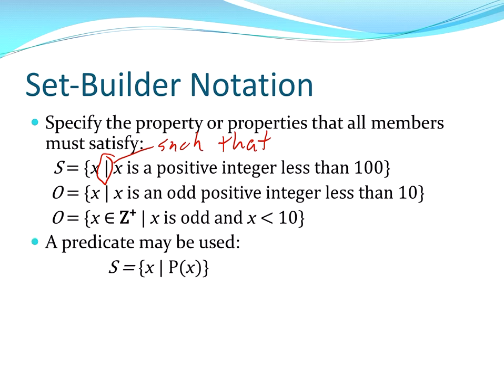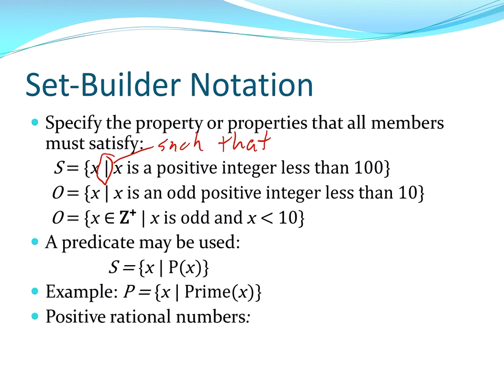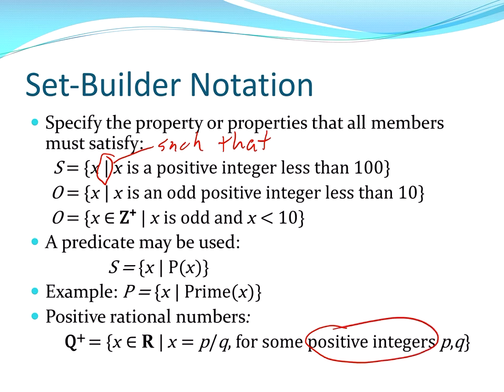You can use a predicate. S is X such that P of X. Because P of X, you would want X such that P of X is true. For example, P would be the set of primes or X such that X is prime. And positive rational numbers. X is an element of R such that X is equal to P divided by Q for some positive integers P and Q, and the fact that we're talking about positive integers eliminates zero.